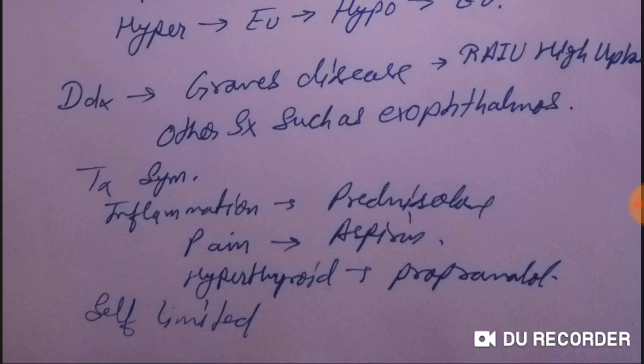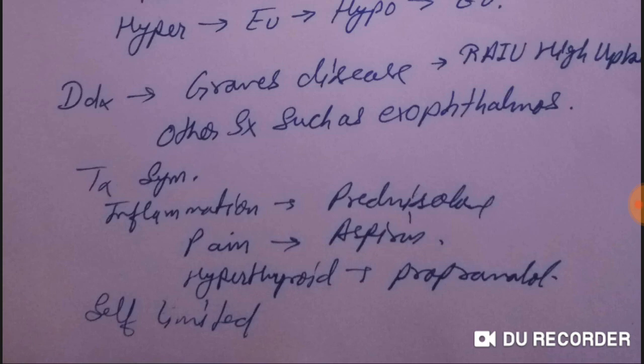The differential diagnosis is Graves' disease. When we do radioactive iodine uptake, in subacute de Quervain's thyroiditis there is low uptake, but in Graves' disease there is high uptake. Graves' disease also presents with exophthalmos, but in subacute de Quervain's thyroiditis there is no exophthalmos.